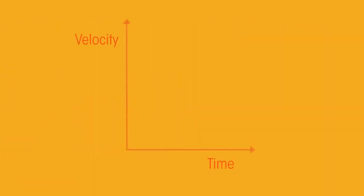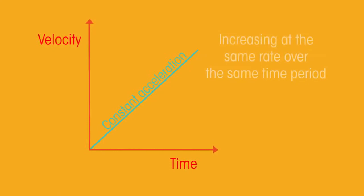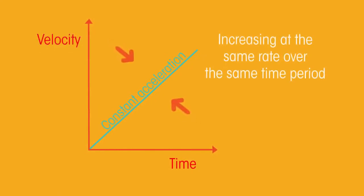What is constant acceleration? It is when the speed, or velocity, is increasing at the same rate over the same period of time. So a straight line.